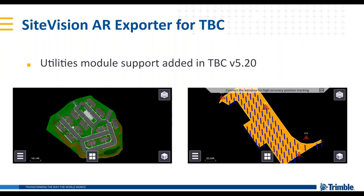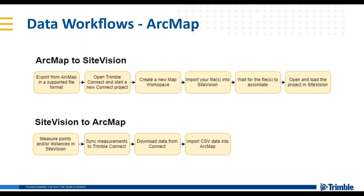Here's an example of what that would look like — we have a surface that was brought in, we assign the coordinates, clean it up if needed, turn layers on or off, and use the AR Exporter to visualize that data in Site Vision. For ArcMap, it's pretty much the same process. You'll want to have a projection file or coordinate system selected in ArcMap, export that information out, upload it into Connect, and you can create a new map workspace with the geodatabase or shapefile in Connect. Then export to Connect, wait for it to assimilate, and once it's done, open Site Vision, load the model, and download it to Site Vision to view in the field.